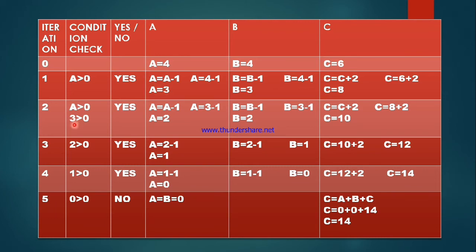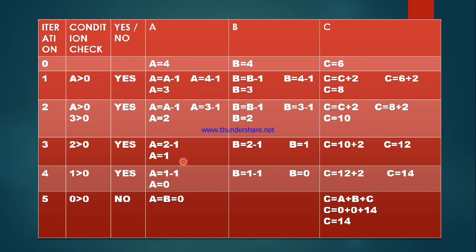In the second iteration, a is equal to 3, which is greater than 0 — condition true. So a = a minus 1, b = b minus 1, c = c plus 2, giving a = 2, b = 2, c = 10. Again, 2 is greater than 0, so condition yes — apply formula: a = 1, b = 1, c = 12. Again condition check: 1 greater than 0 — yes. So a = 0, b = 0, c = 14.